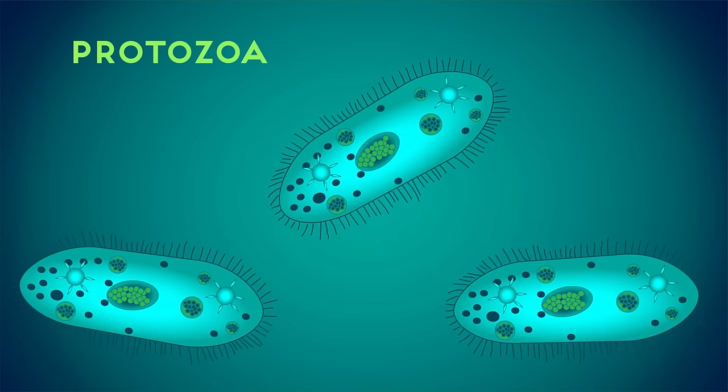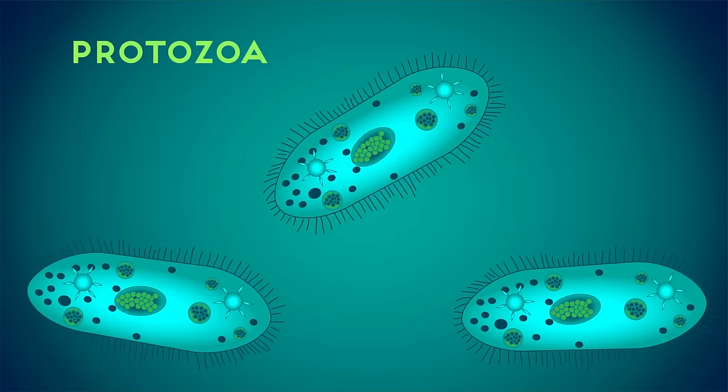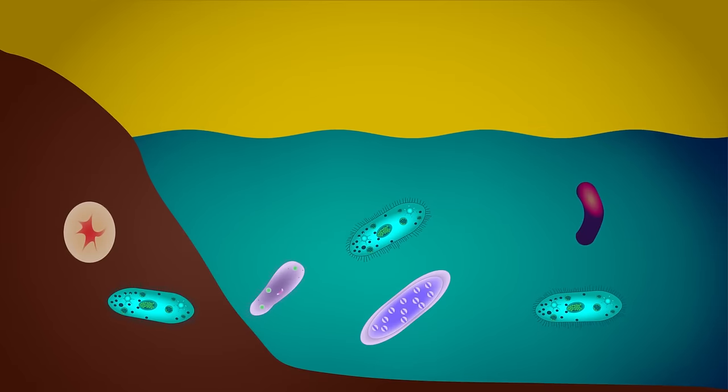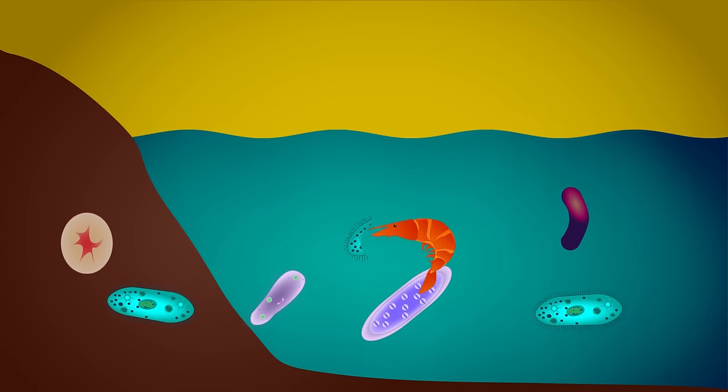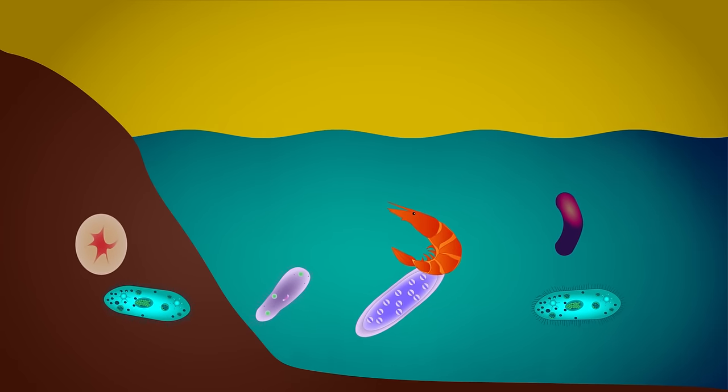Protozoa are made up of a single cell. They are usually found in water bodies and soil and make up the backbone of many food webs by providing nutrients for other organisms to grow.